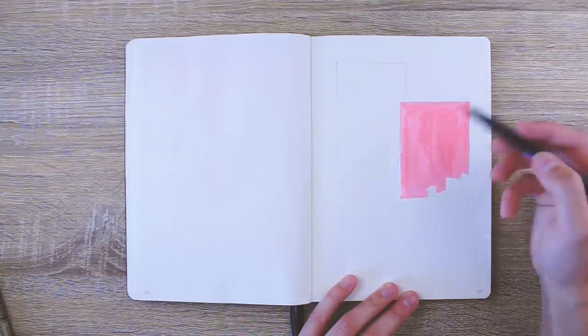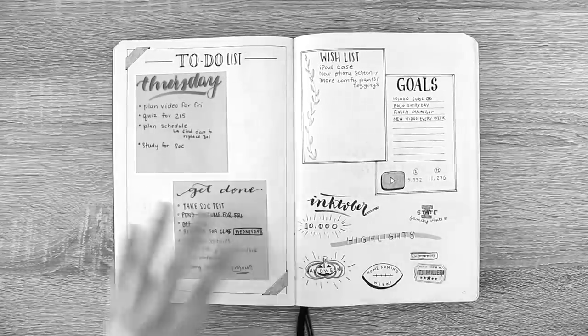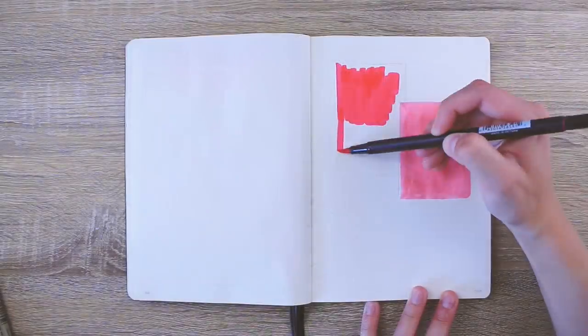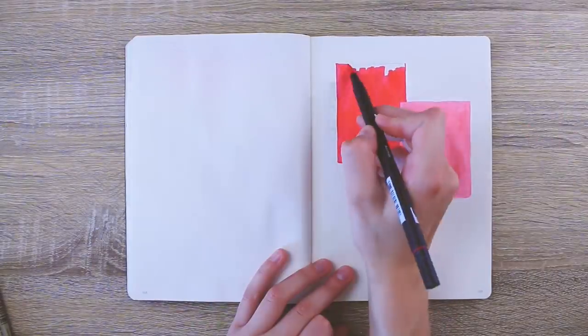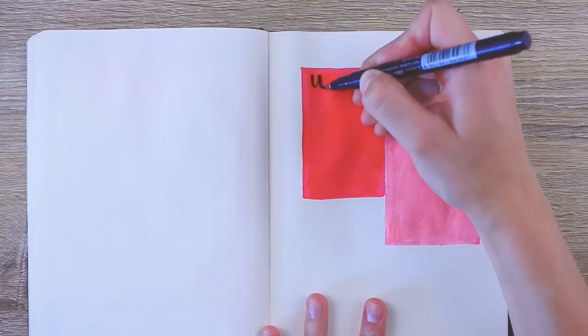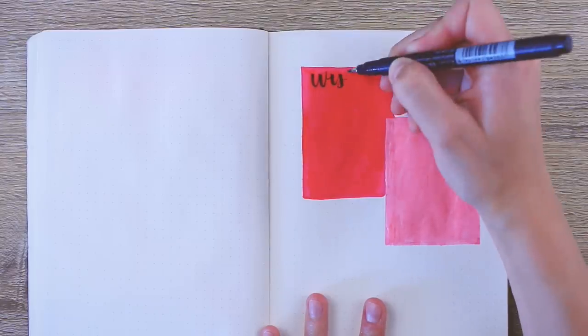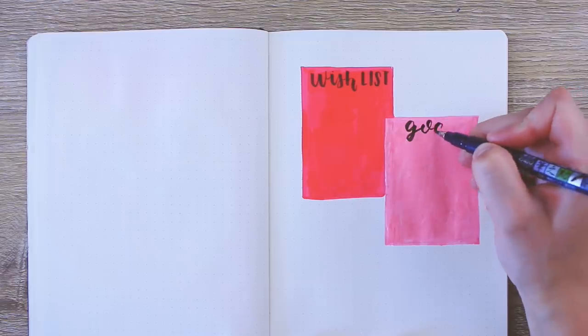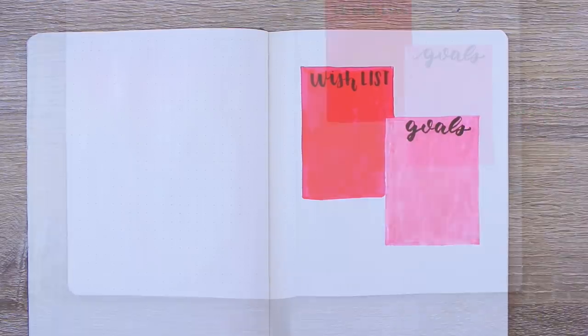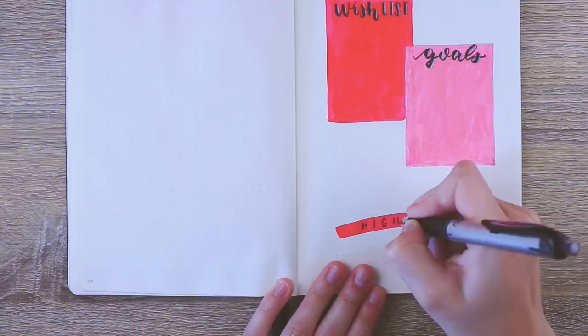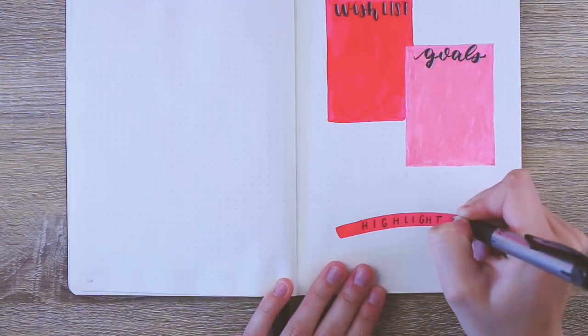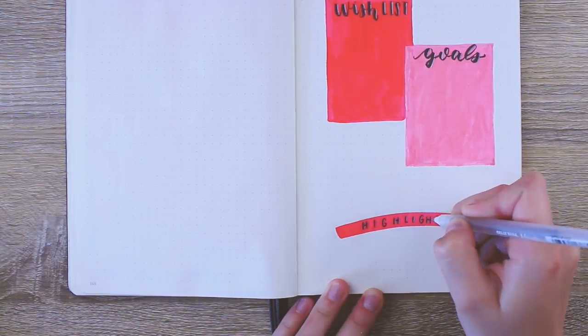So if you've been watching my videos for a while you might actually recognize this layout from my October spread that I did last year. It's exactly the same layout, just different colors. I was going back through some of my old spreads to get inspiration for this month and I remembered how much I loved this layout and I really wanted to try it again. So I just have a wish list, a goals list, and then a place for monthly highlights, which is basically where you can write anything notable that happens during the month that you want to remember. I like to leave a little space for that because it's kind of a fun thing to go back and look at later on in the year.